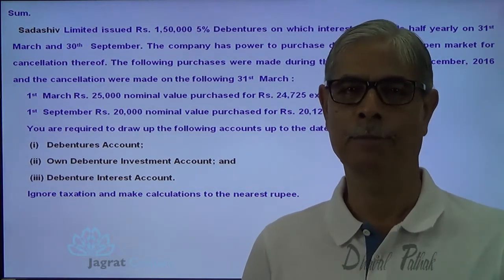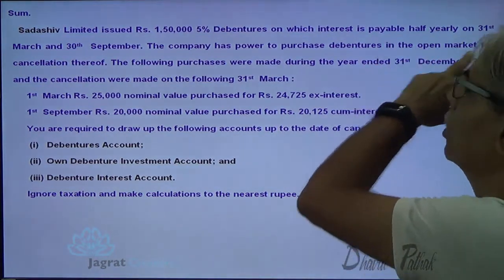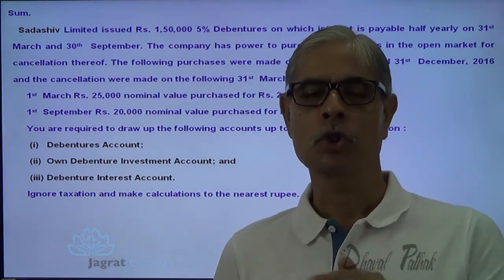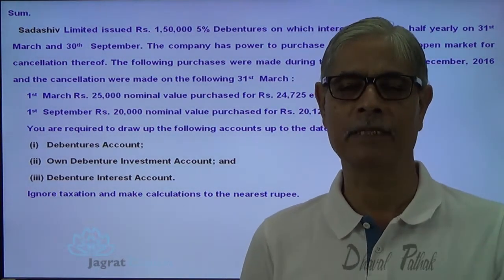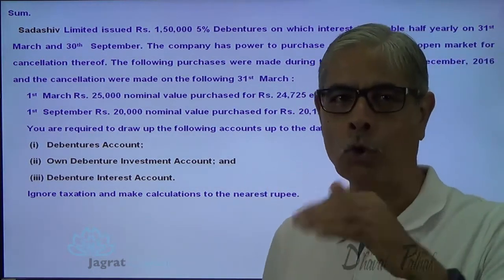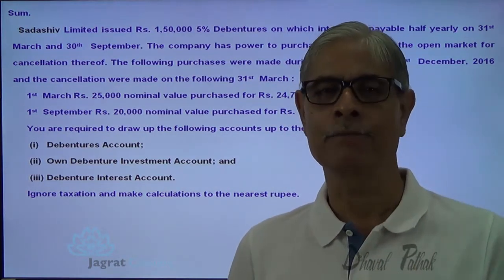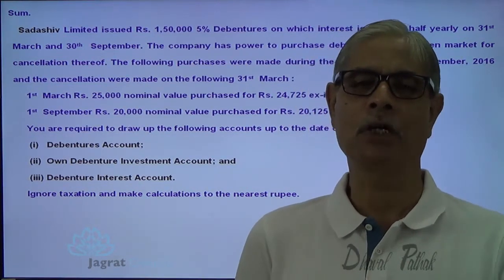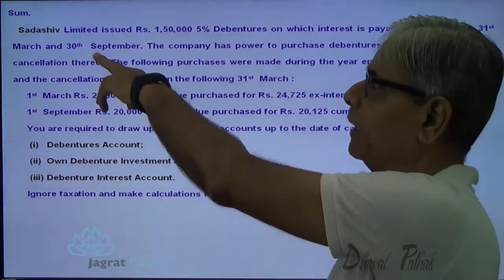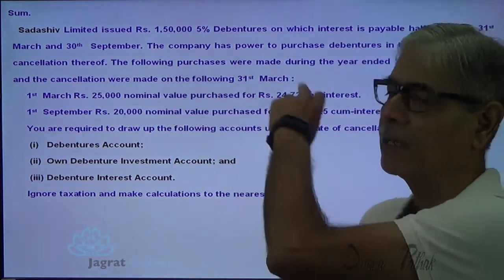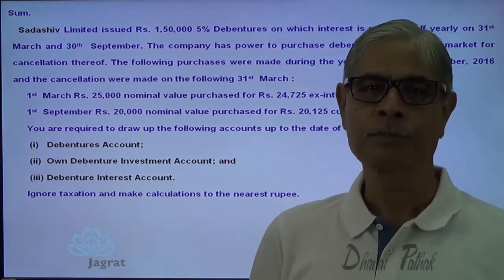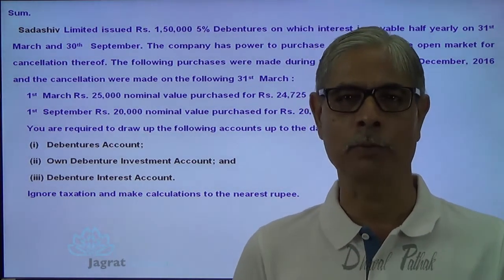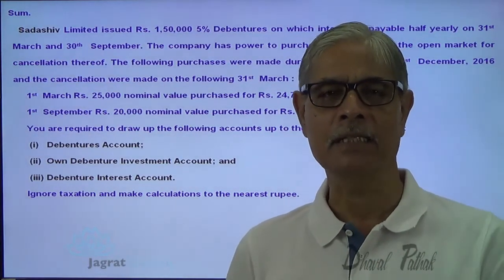First important point: interest is paid on 31st of March and 30th September, but the accounting year ends on 31st of December. The accounting period cycle ends on 31st December and the interest cycle does not coincide with the accounting cycle. So we are required to write down adjustment entries for accrued interest. The last date of interest payment is 30th September, so we must write accrued interest for 3 months at the beginning of the year and similar adjustment entries at the end of the accounting period.